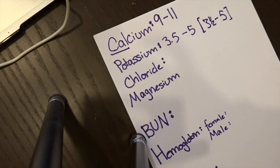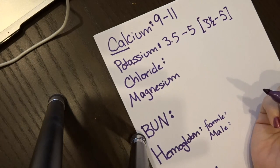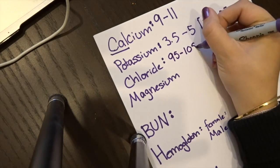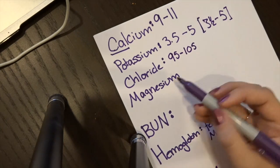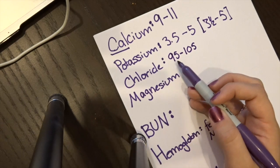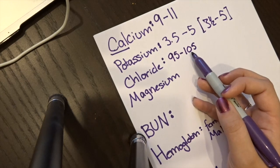Chloride, I like to think of a chlorinated pool. And when you go swimming, it is usually 95 to 105 degrees outside. So chloride is 95 to 105. Think of a chlorinated pool and you're only going to want to go swimming if it's 95 to 105 degrees.